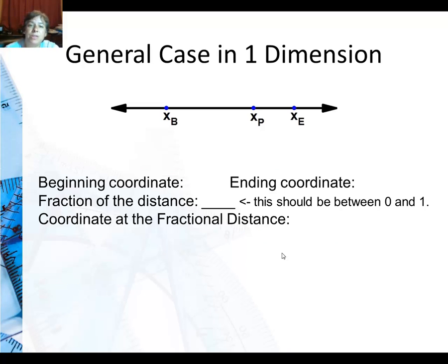So, let's take a look at the general case in one dimension. First of all, I want to define some things. We need a beginning coordinate, and I need a distance. So I'm going to keep the distance d between the beginning and the ending coordinate. The beginning coordinate is x of b. x of b, b is for beginning. So you can probably guess what the ending coordinate is: x of e. Now I'm going to have to come up with something to stand in for a fraction of a distance, because it's not always going to be two-thirds. So I'm going to use f. And then the point that's at that fraction is x of p.